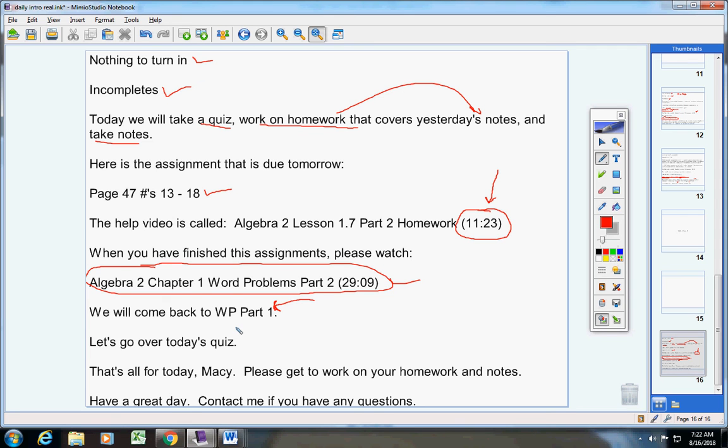Numbers three and four, those are compound inequalities. One of them is a conjunction and the other is a disjunction. And then lastly, number five, solve that absolute value inequality. Remember, Macy, your answer for number five will either be a conjunction or a disjunction. Keep that in mind.